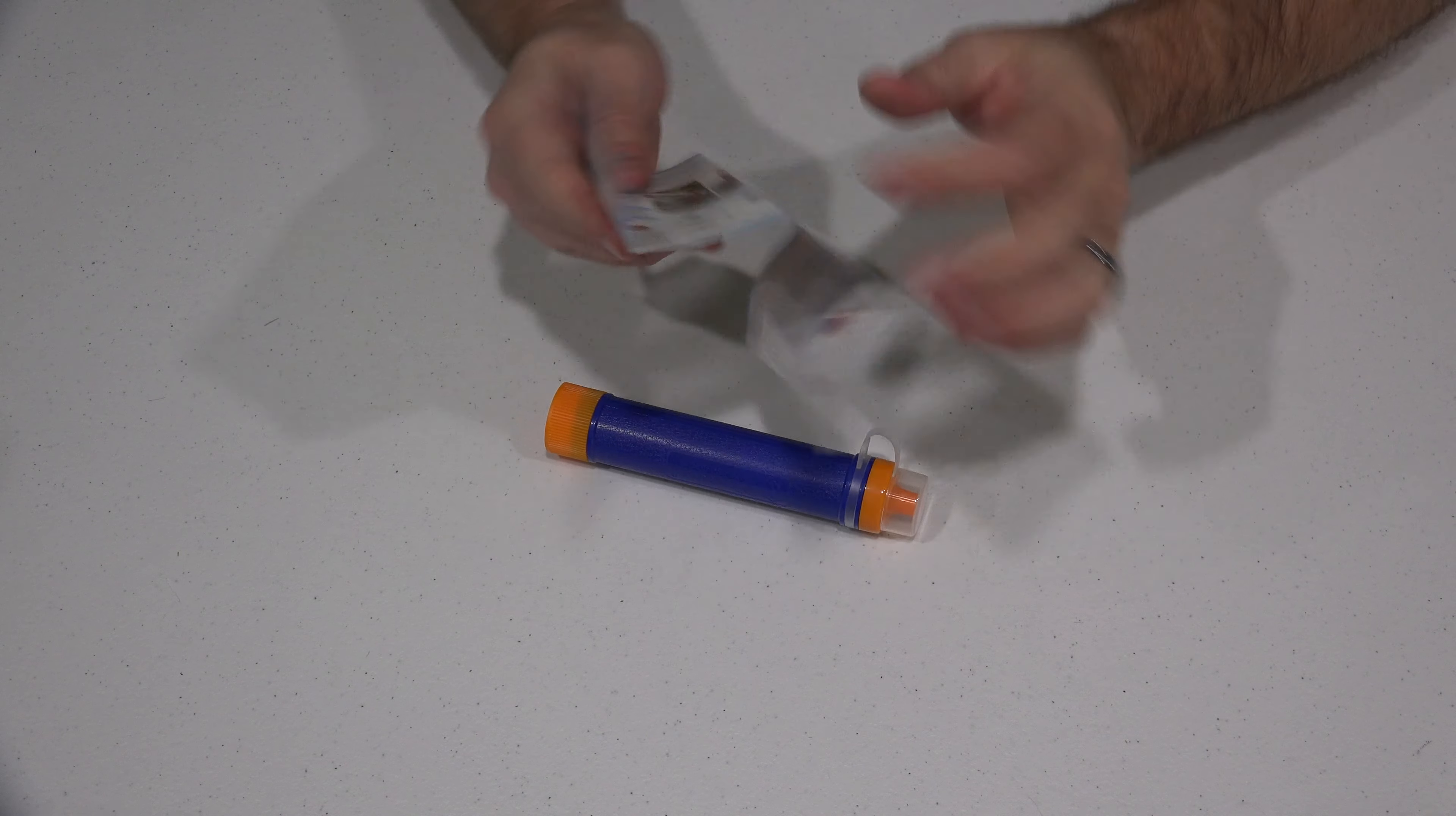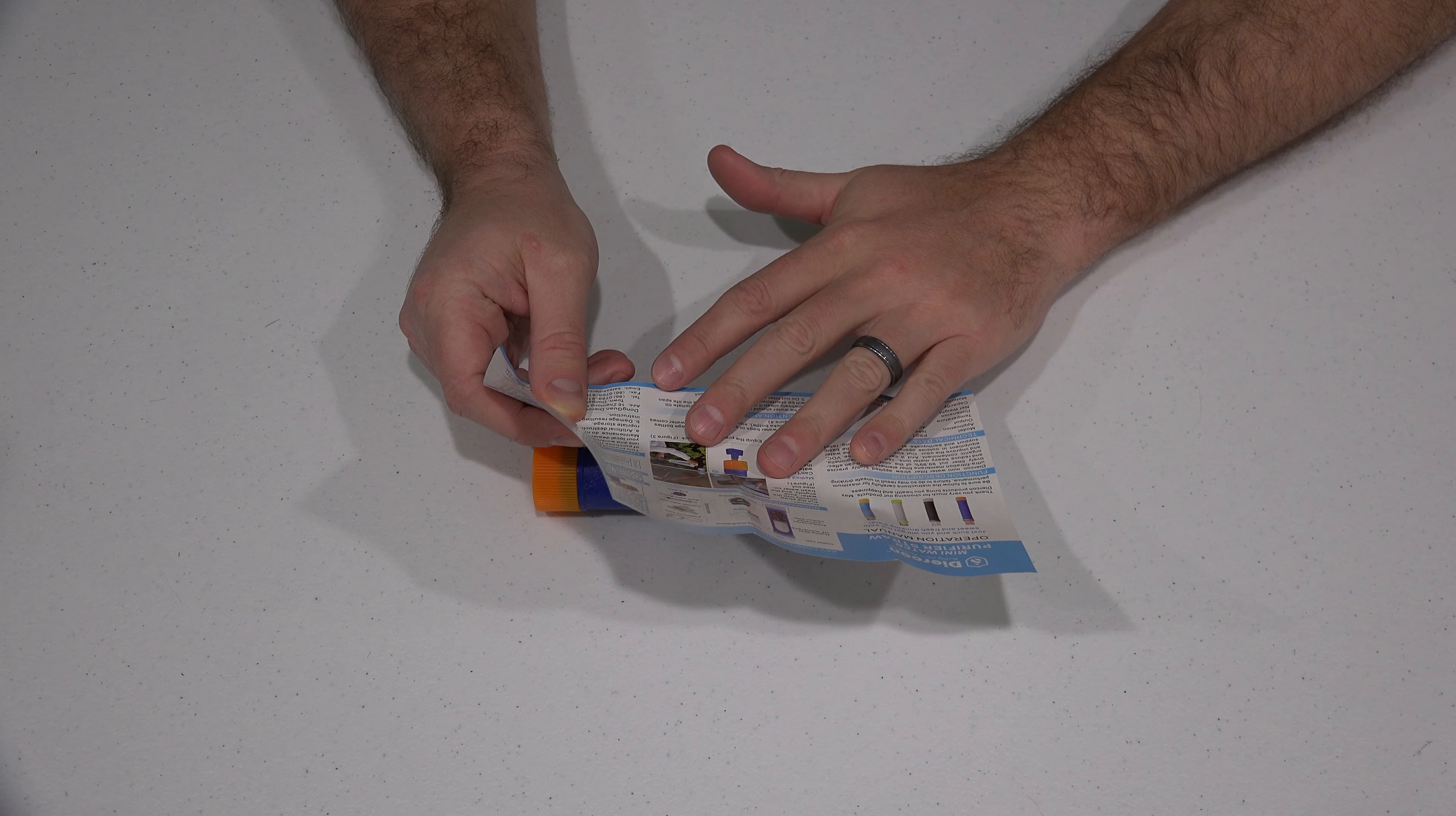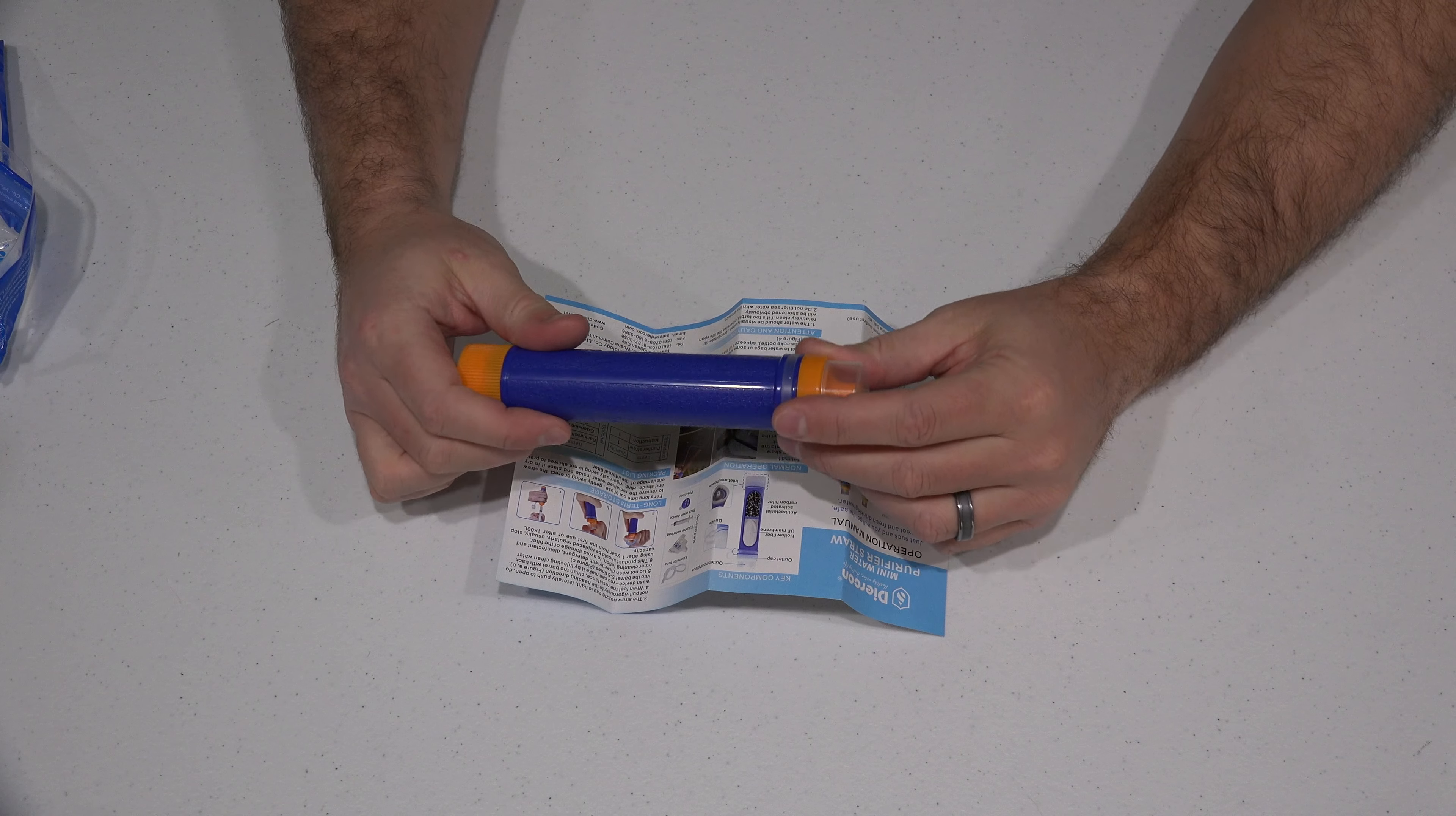So you've got instructions in various languages. It's got English. It says operation manual: just suck and you will get the safe, sweet and fresh drinking water. So you can see here it's explaining how to operate it. It says method one: put the straw directly into the water, suck slightly and the fresh water comes out. Method two: you can't reach the water, connect the straw to an extension flexible tube then suck. So I wonder if this has the flexible tube. Yeah, I don't think this came with the flexible tube, but let's open it up and see.